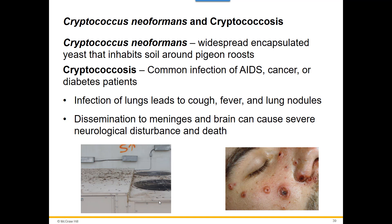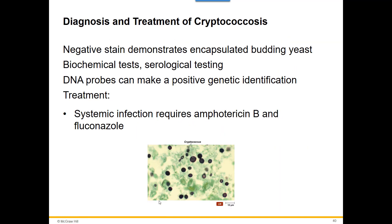To diagnose Cryptococcus, you can look for budding yeast, use biochemical tests, antibody tests, and DNA probes. It is treatable — the sooner you treat, the better. Amphotericin B and fluconazole are used if there's a systemic infection.